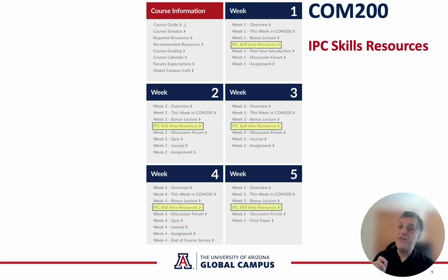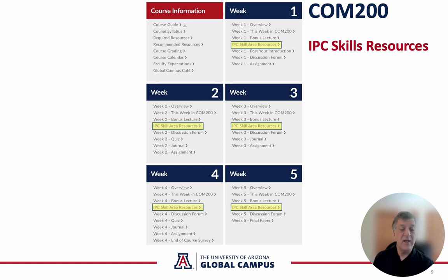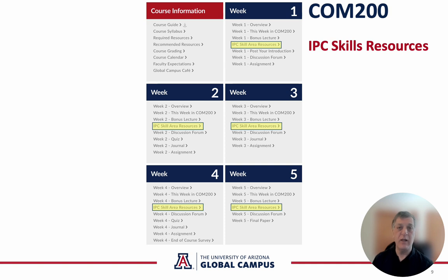You'll notice that you have the same link each week in the class — the IPC Skill Area Resources. No matter which week's link you click on, it takes you to the same page. This page presents a set of six reading packets that align with the six IPC skill areas in the assessment, one of which you will probably be working on for your IPC Skills Improvement Plan. In week two, you'll be assigned to supplement what's provided in the reading packet with some new materials that you find on your own. We hope you'll use these each week in the course and that you'll find them useful.